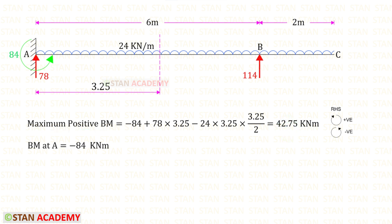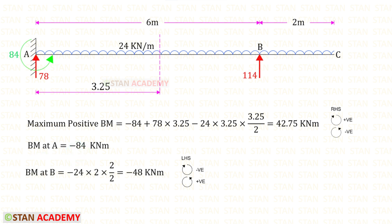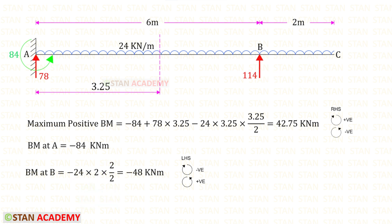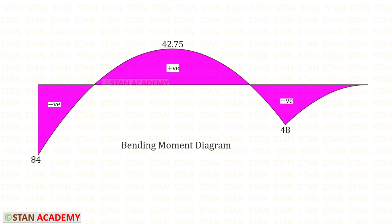Let us find the bending moment at point A: we have Ma acting anti-clockwise, so it is negative. To find the bending moment at point B using the left-hand side rule, the UDL of 24 acts clockwise so it is negative, and multiplying the load by the distance and then by half gives the bending moment at B as minus 48 kilonewton-meters, which we had already found. Here you can see the bending moment diagram. At two points the bending moment becomes zero — these are the points of contraflexure.